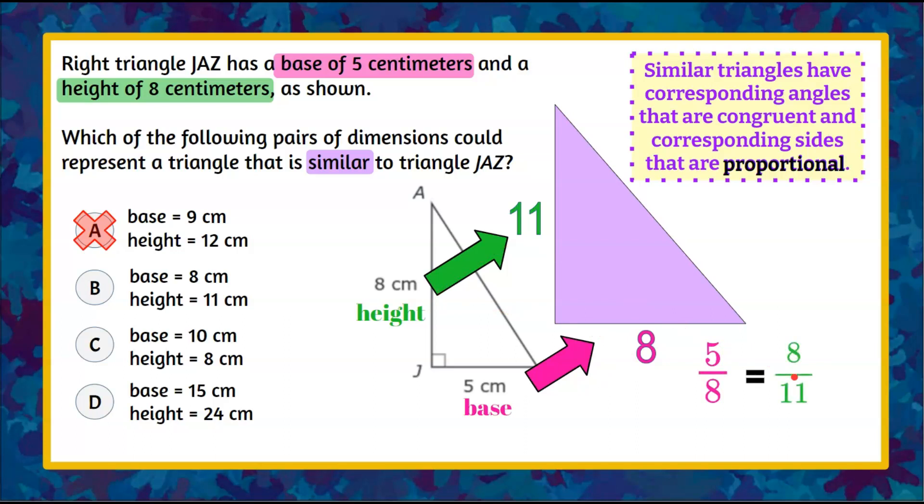We're going to use cross product property to determine if there's a proportional relationship here. So 5 times 11 is 55 and is that equal to cross 8 times 8 is 64? 55 does not equal 64. Therefore we can eliminate answer choice B.